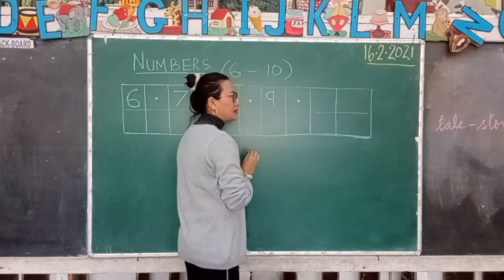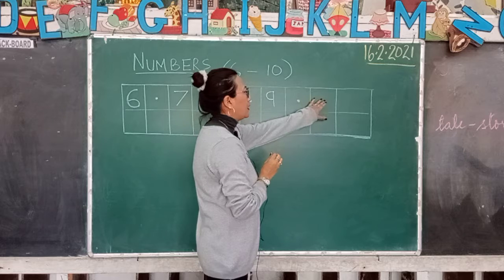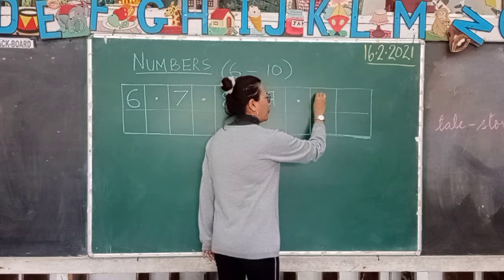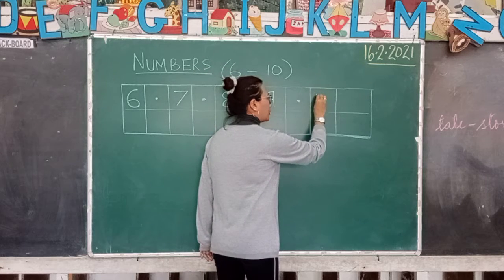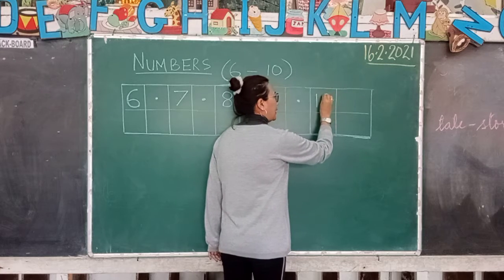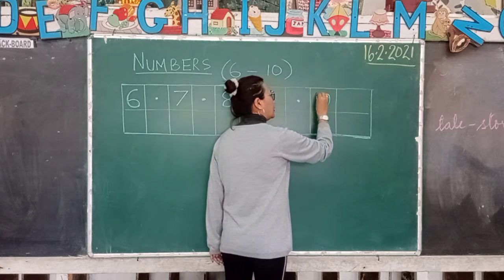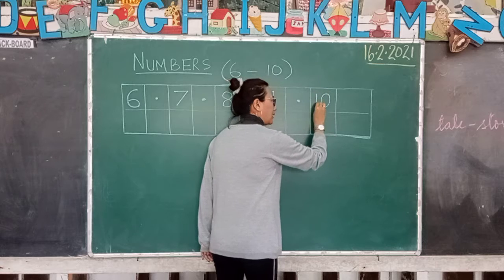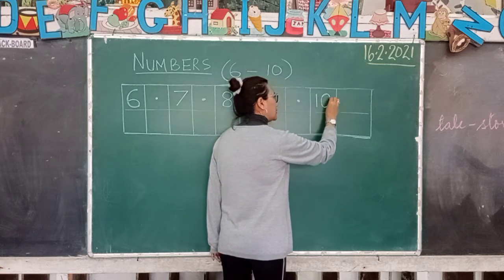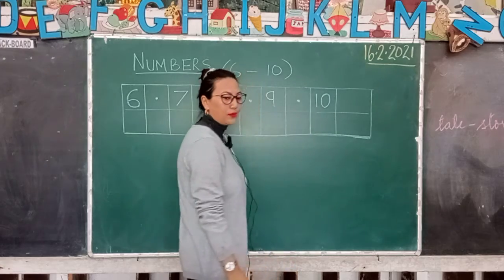Keep this box empty and now write number 10. Number 10 is a straight line and a big circle — a straight line and a big circle. This is your number 10.